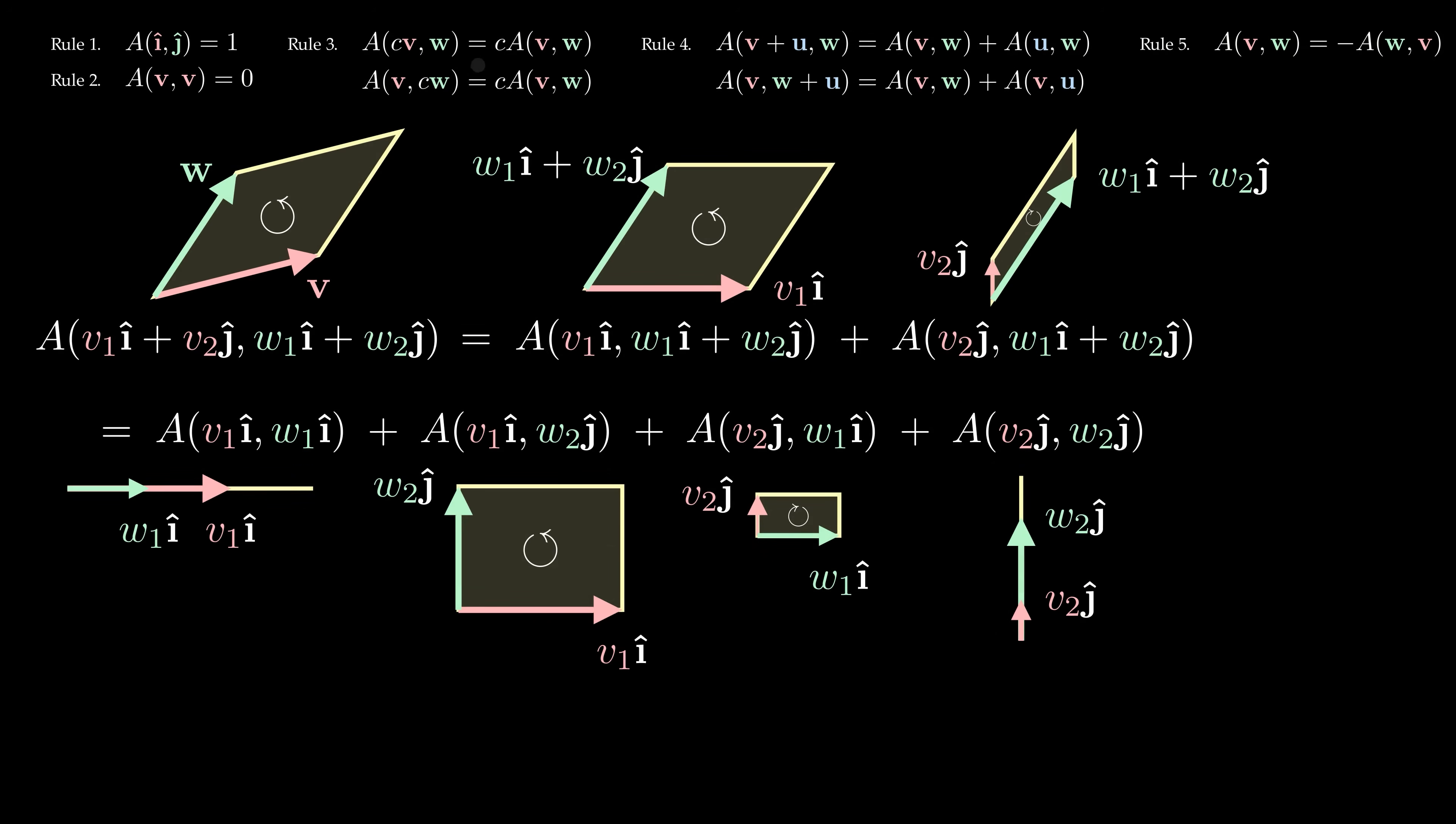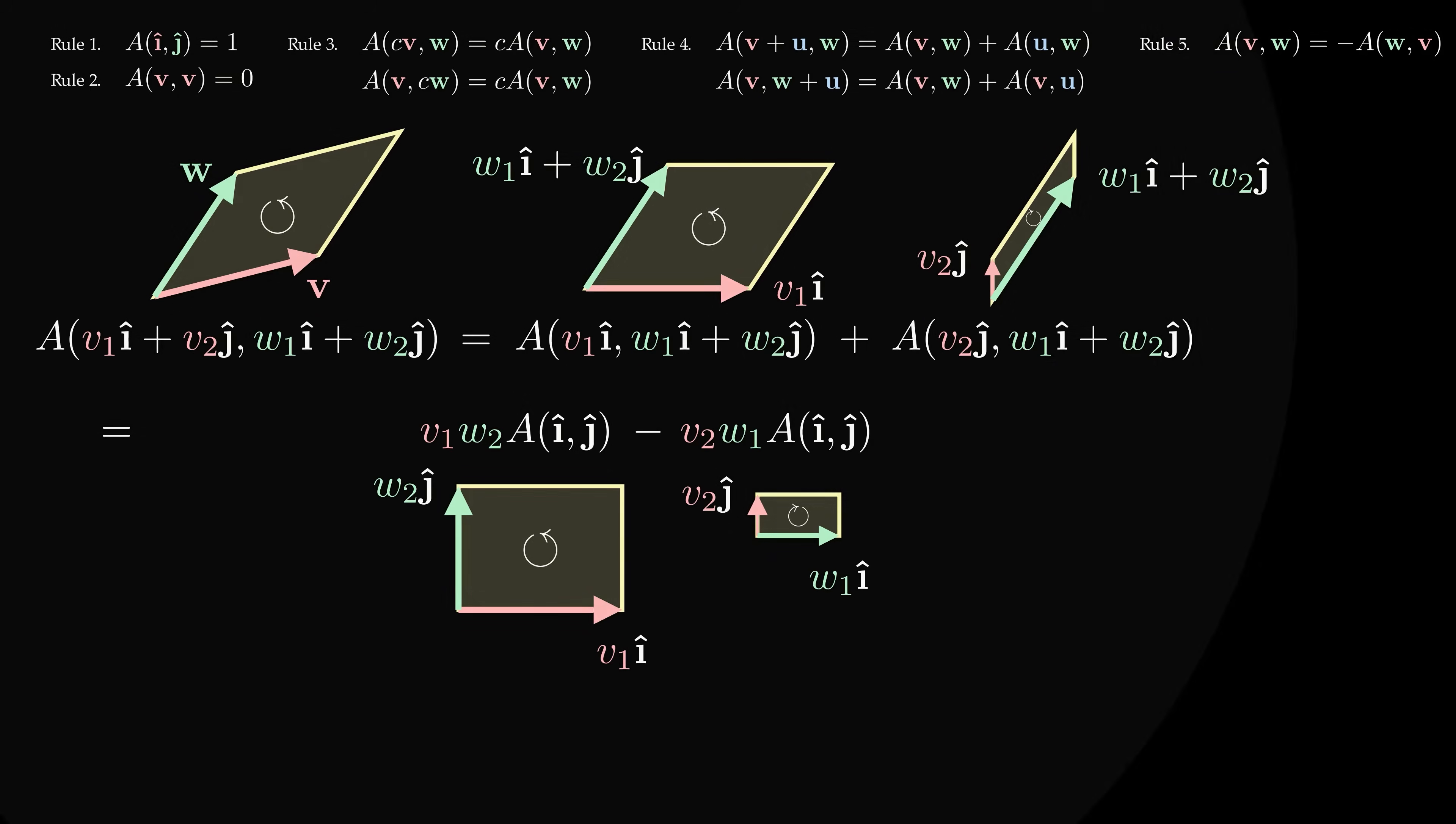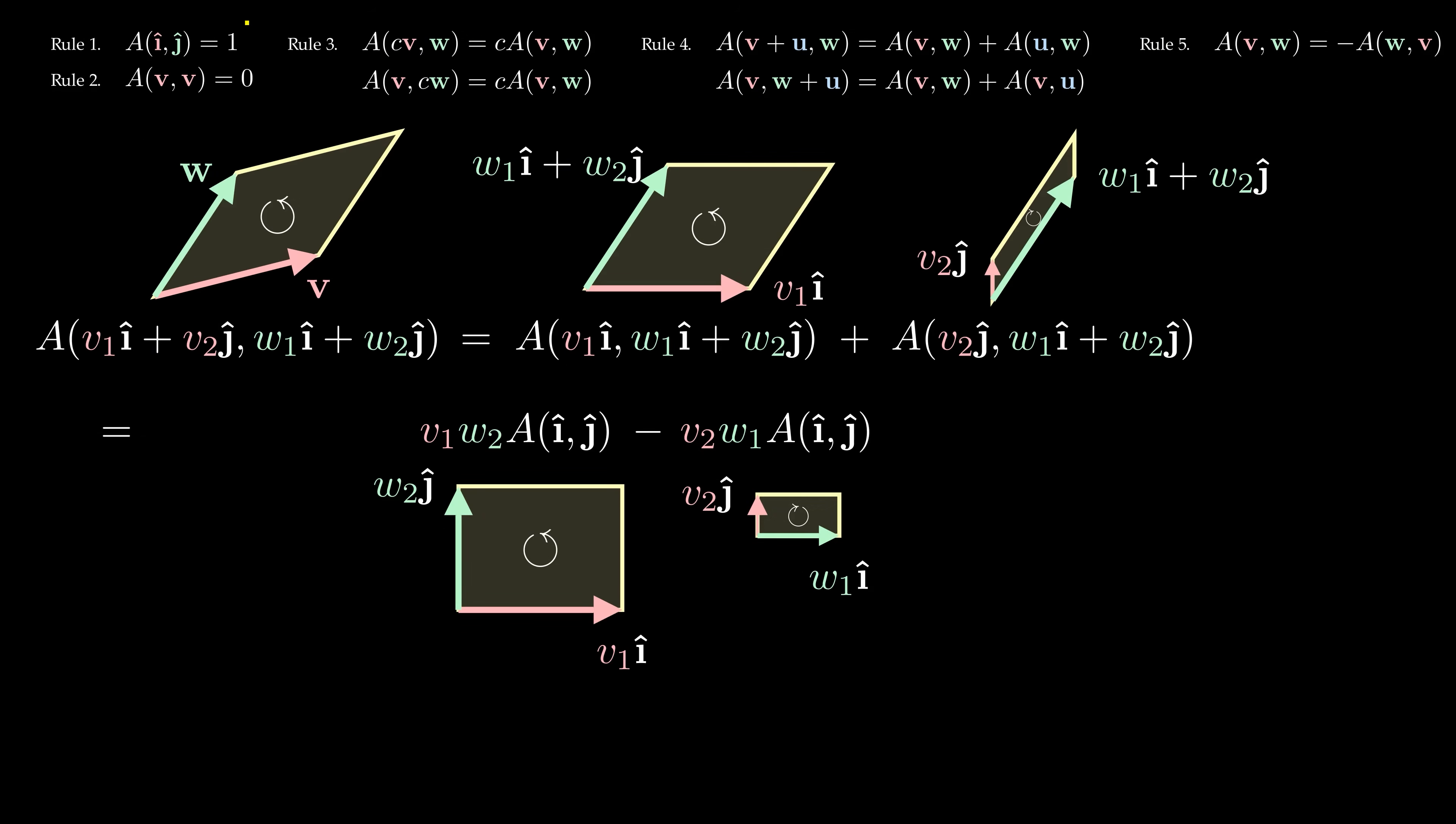By rule 3, we can pull the constant terms out of these area functions. And by rule 2, the first and fourth terms vanish. Finally, we can change the aji term to minus aij using rule 5, and we know that A of i and j is the area of unit square, which is just 1.